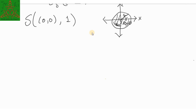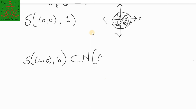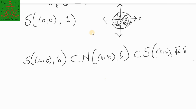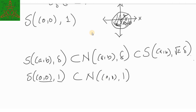We have defined two neighborhoods and now state that both are equivalent neighborhoods in the following sense: the spherical neighborhood S(AB, delta) is a subset of the rectangular neighborhood N(AB, delta), which in turn is a subset of the spherical neighborhood S(AB, sqrt(2) * delta). This is easy to see with the example of center (0, 0) and radius 1.